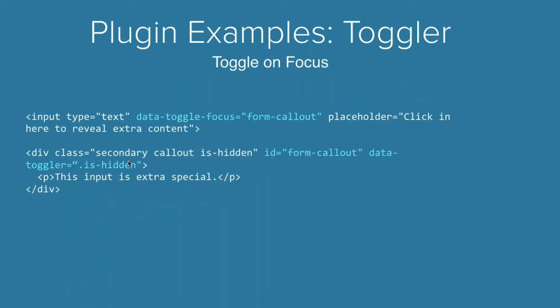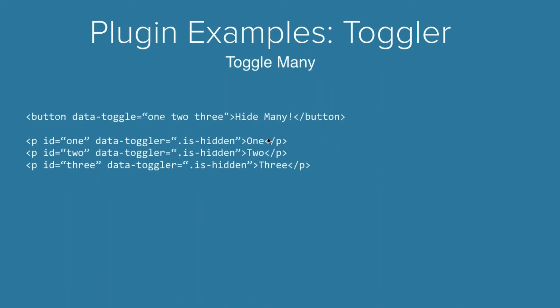For example, you can toggle based on focus. Say you have a set of helper text associated with a form that you only want to show when somebody's focused in on an input. Rather than using data-toggle, you use data-toggle-focused, and it behaves the same way, but happens when you focus in on that input.